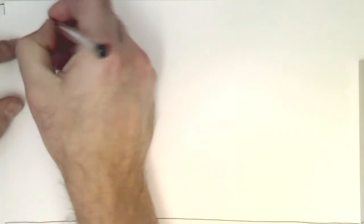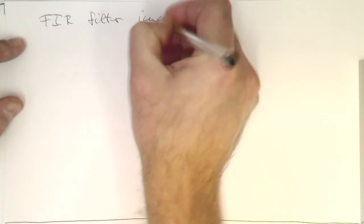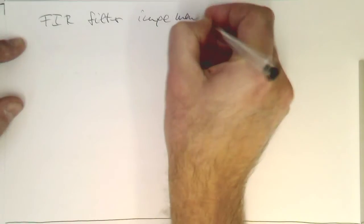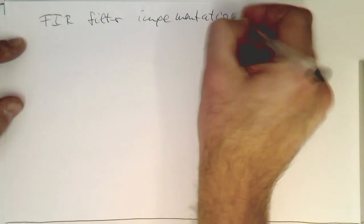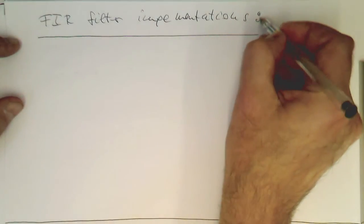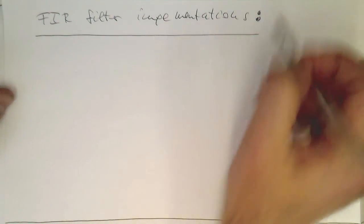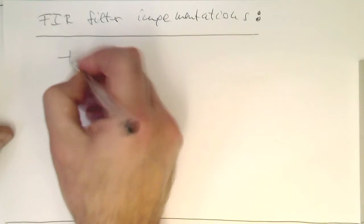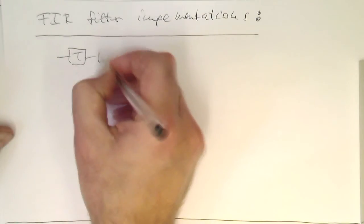Let's think about FIR filter implementations. So how do we actually turn something like this into working code?